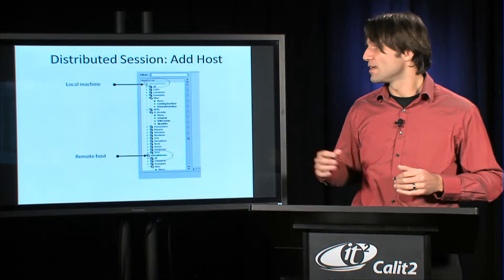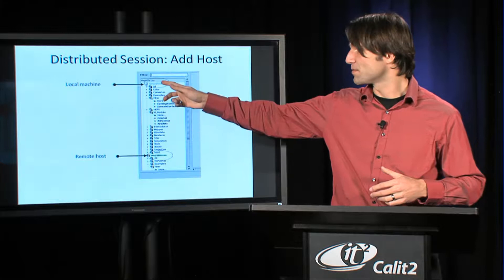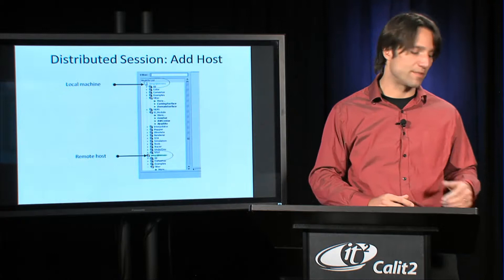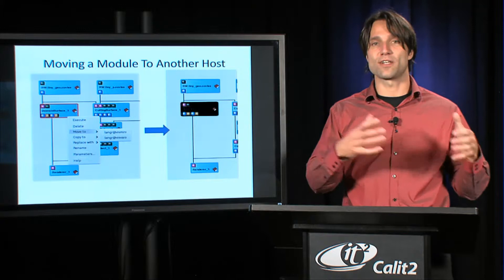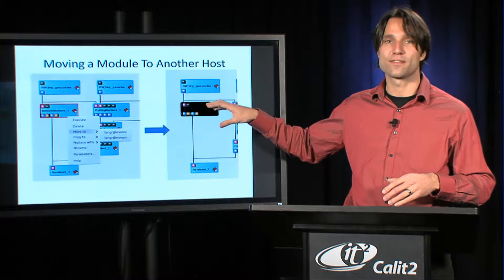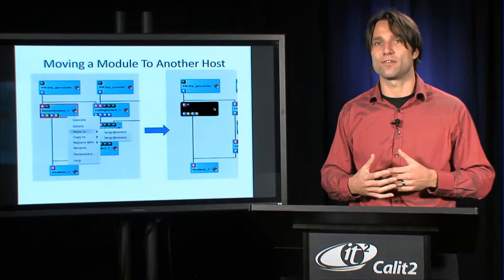Once you've added the other host, you'll see in your list of modules that your own local host is still listed at the top, but you'll also see this remote host and a list of modules available on this remote host, all listed in the module list of the map editor. If you're going to use one of the modules on the remote system, you can select it from this list, drag it onto your map, and you'll see in a different color this module show up. You can connect it to other modules that run on your local machine.